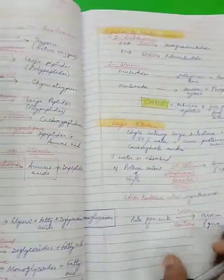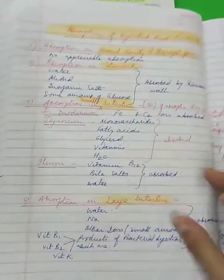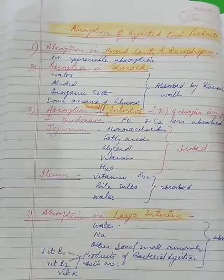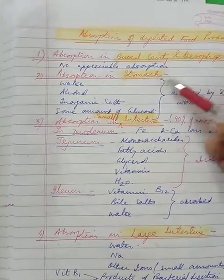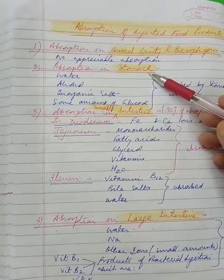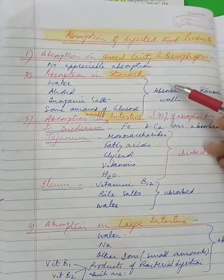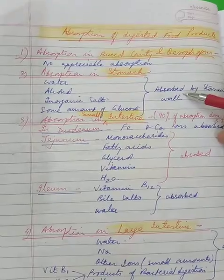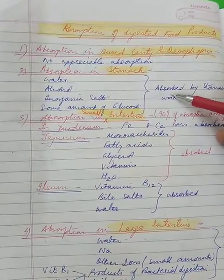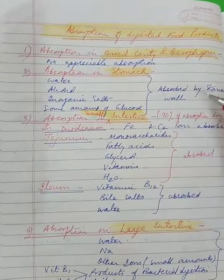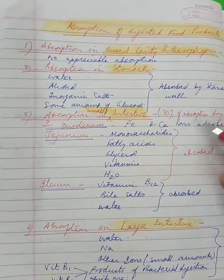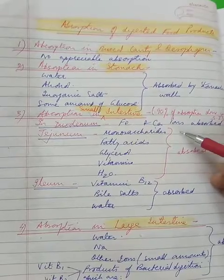Today we will start with the new topic that is absorption of digested food substances. What is absorption? Absorption is the process by which various end products of digestion pass through the cells of mucosa into the blood or lymph to be transported to various body cells.